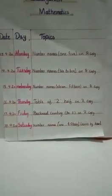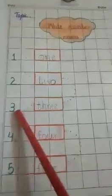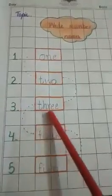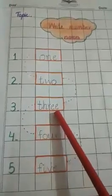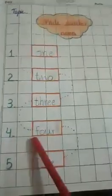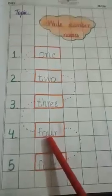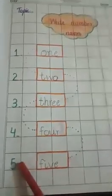Write numbers names: 1 - O N E - 1, 2 - T W O - 2, 3 - T H R E E - 3, 4 - F O U R - 4, 5 - F I V E - 5. Guide your child and help in writing and learning these numbers.